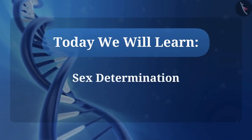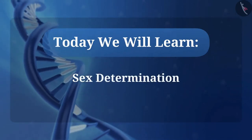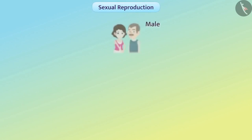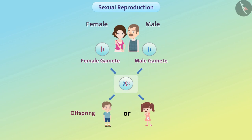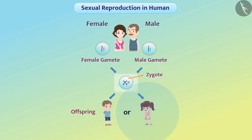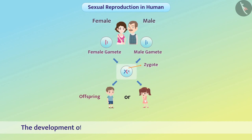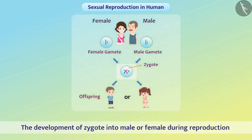This video is about sex determination. We know that male and female participate in sexual reproduction. Since both sexes participate, the probability of offspring being a male or a female is equal. The development of a zygote into a male or female during reproduction is called sex determination.